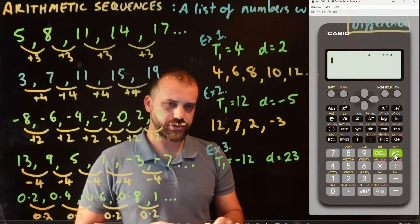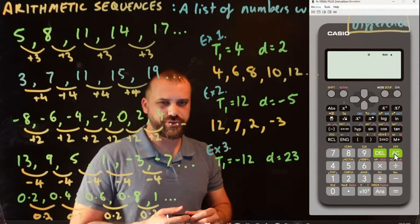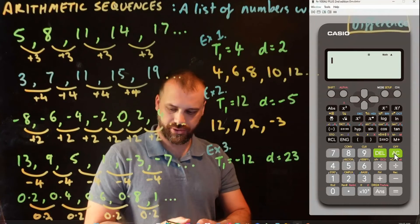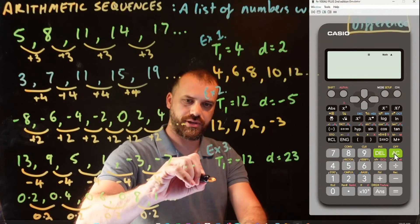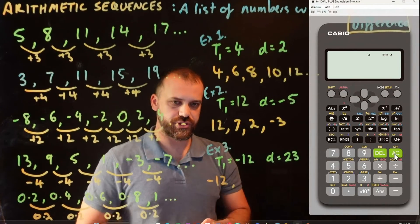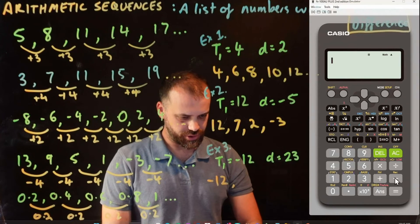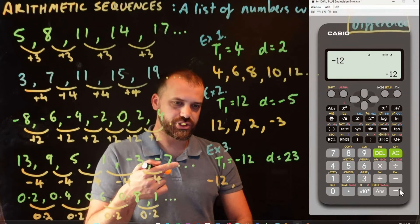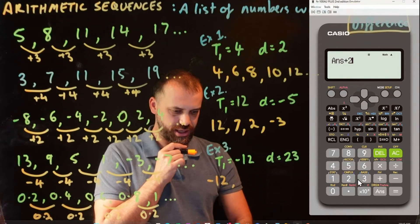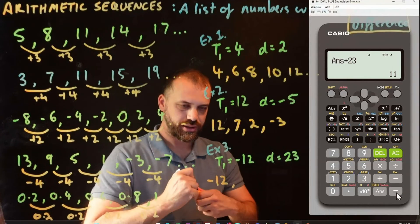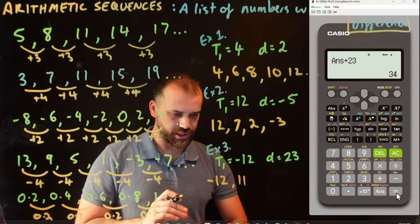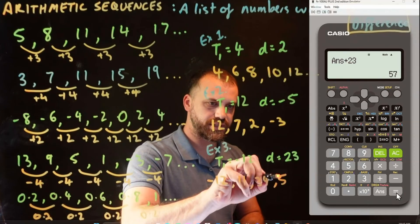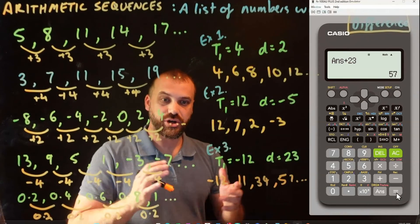One more example — I'll do it a different way. Term one equals negative 12 and the common difference is 23. I'd hate to do this in my head, but luckily I have my calculator. So: negative 12 is my first term. Adding 23 each time gives us 11, then 34, then 57. And we could do that as many times as we wanted to.